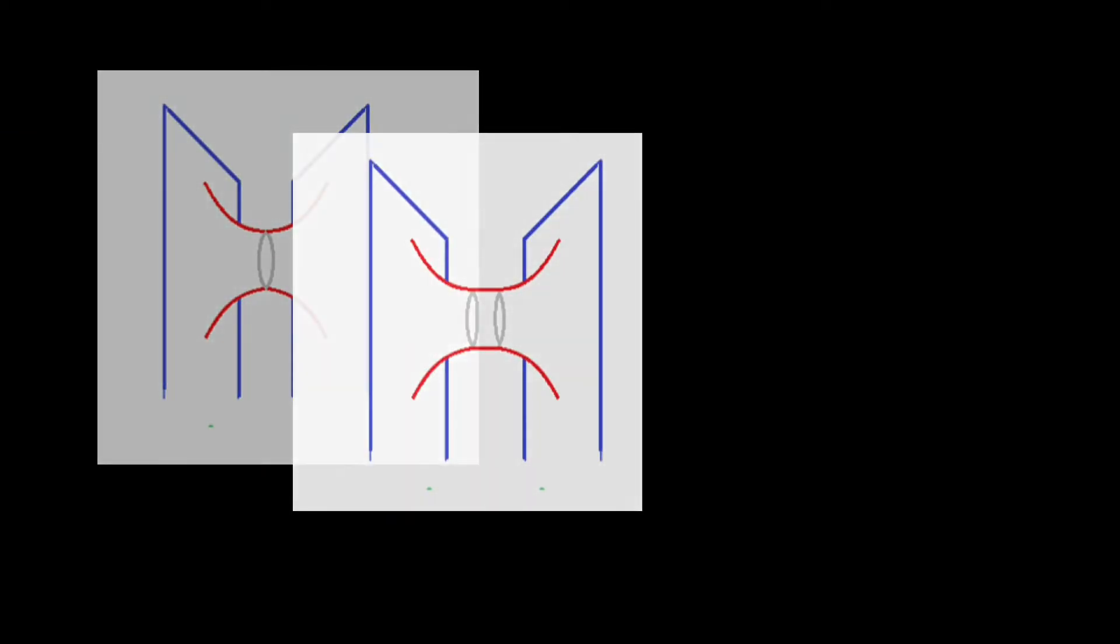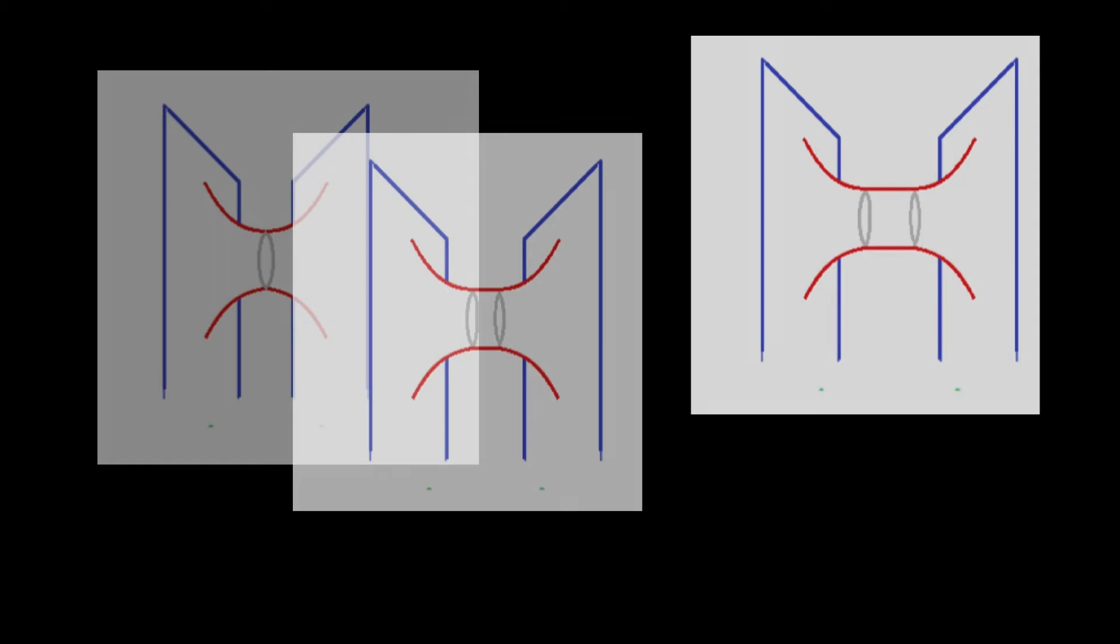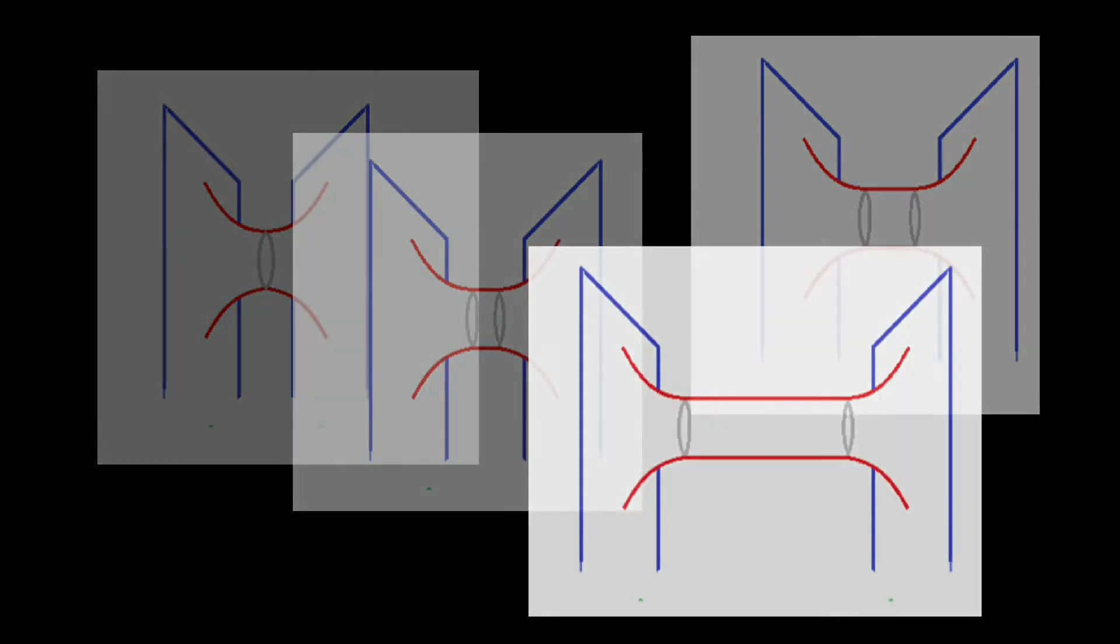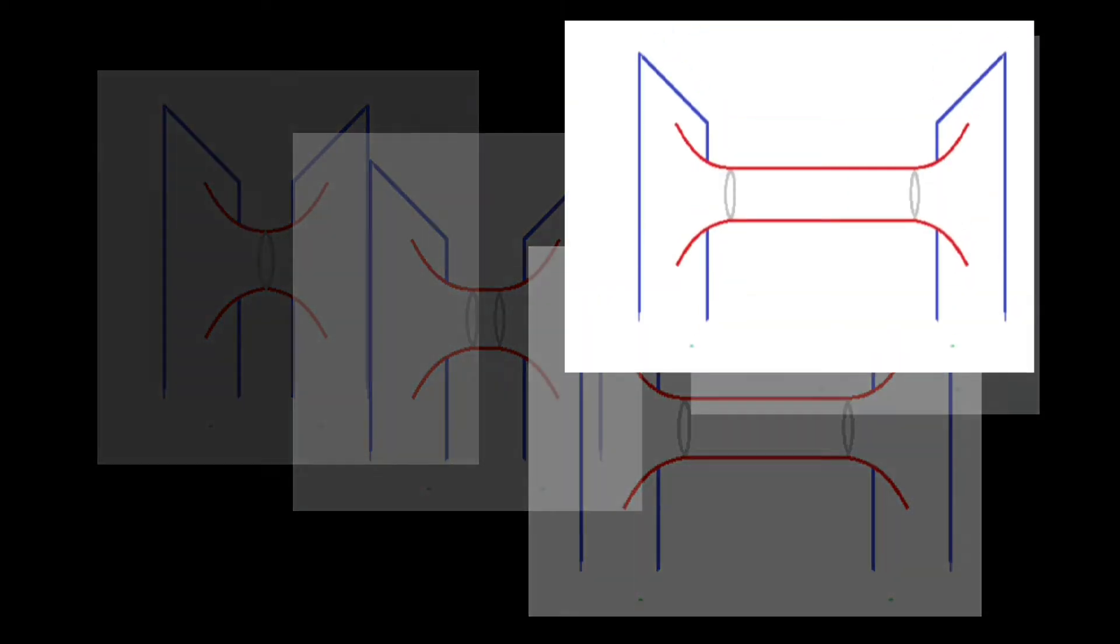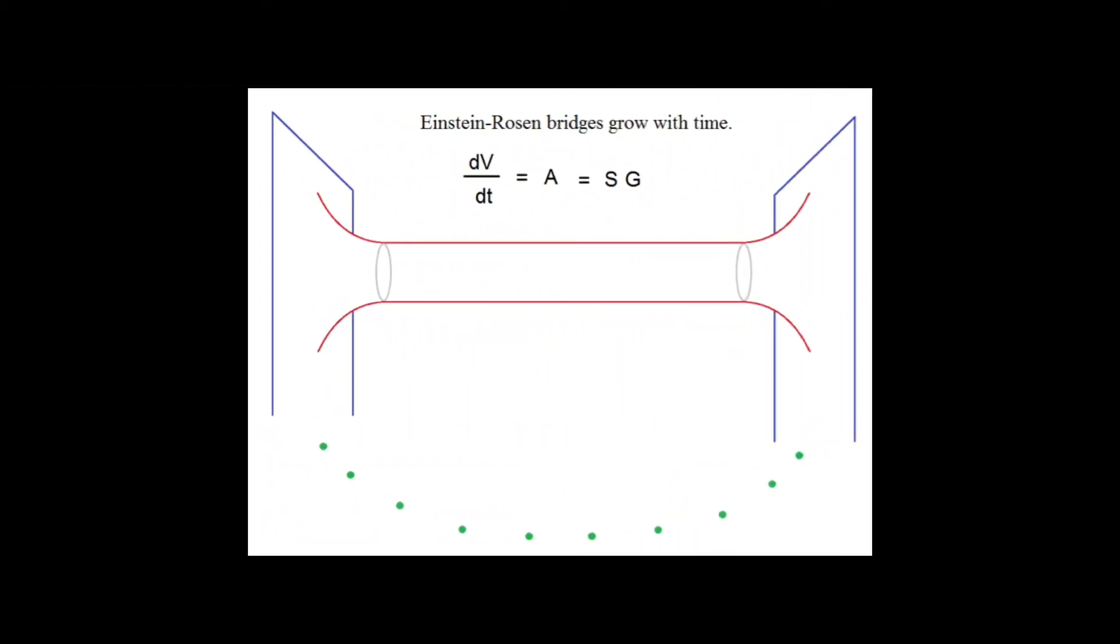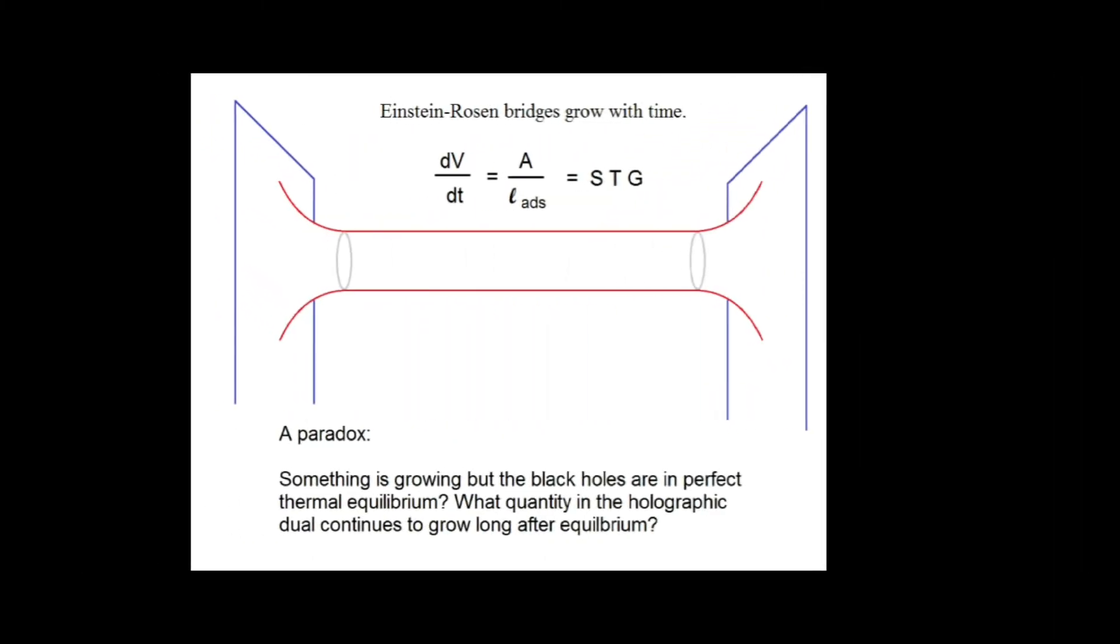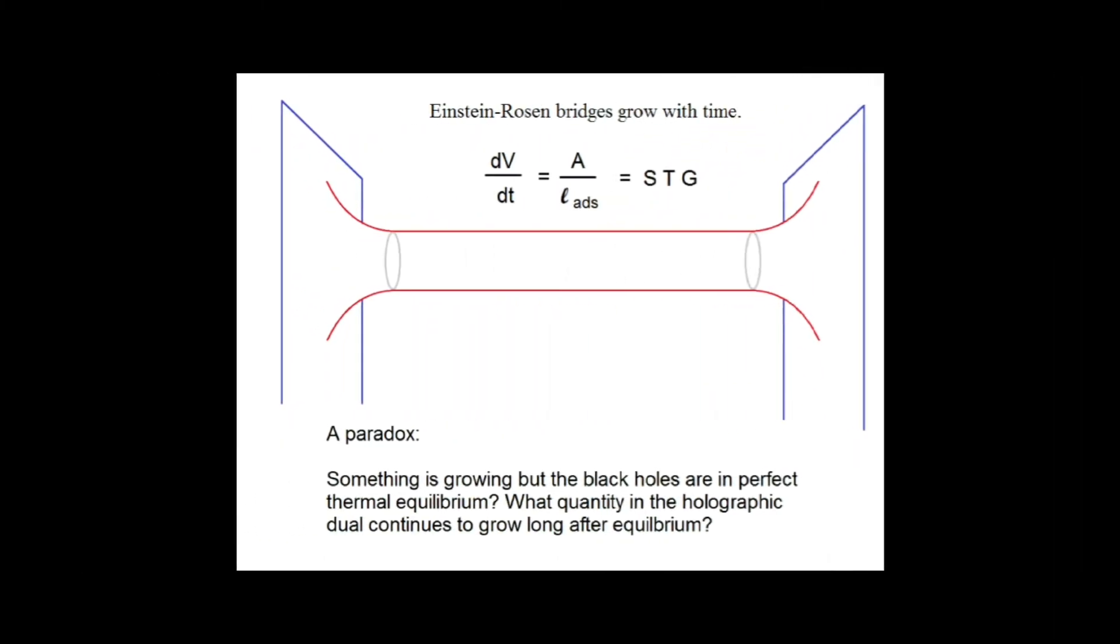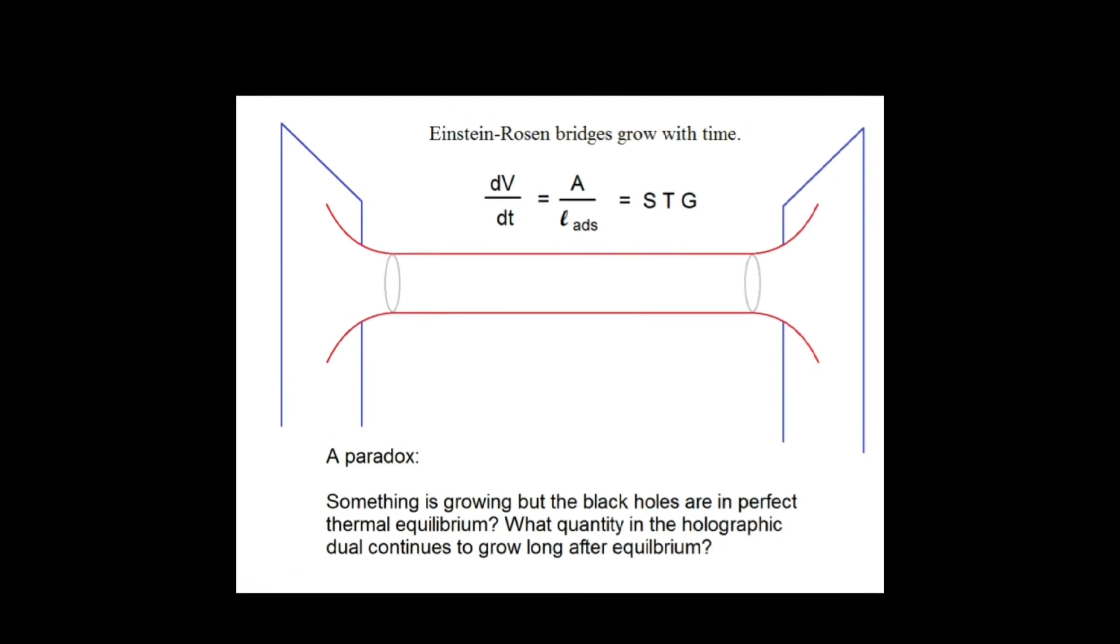One key thing about the wormhole bridge is that it grows with time. Growth of the volume of the wormhole is proportional to entropy of black holes. But the black holes are in perfect thermal equilibrium. Perfect thermal equilibrium means that the entanglement has maxed out and it cannot be increasing. So this is the main idea of the paper, which says that entanglement is not sufficient to measure the growth of the wormhole. So what quantity would grow long after equilibrium? This new quantity Susskind conjectures to be complexity.